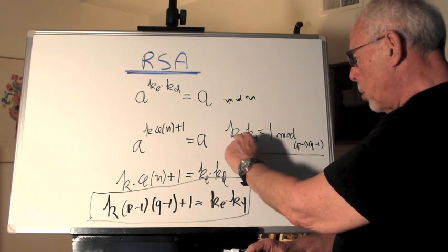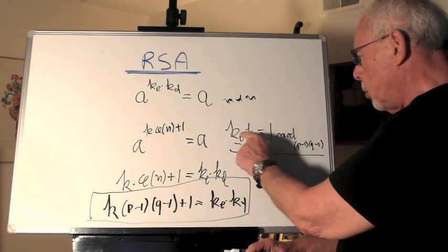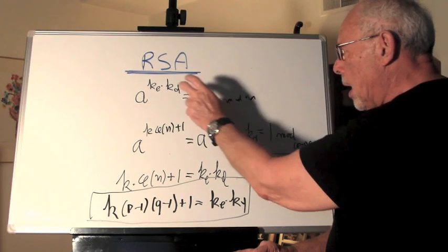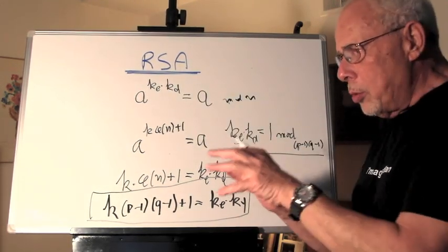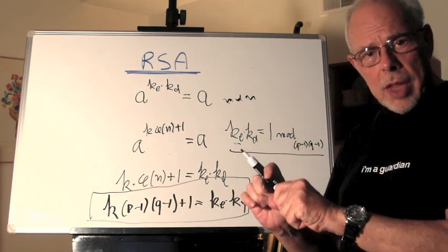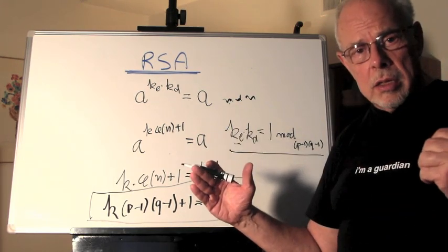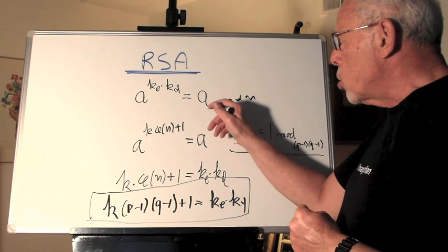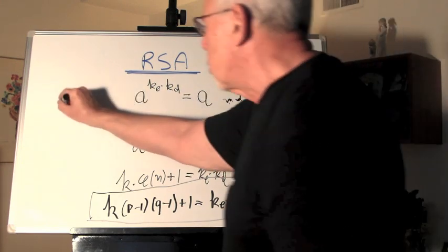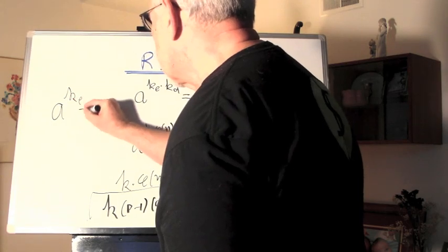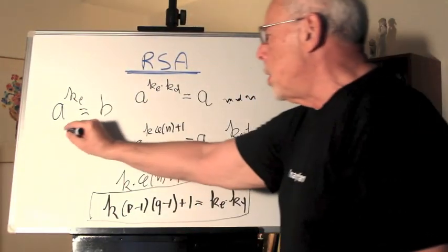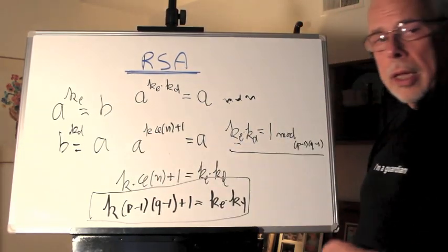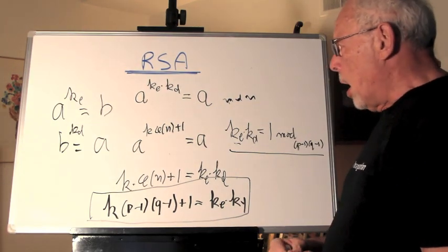So, any number here that is co-prime with this will qualify as KE. From KE, we can find KD, and then we have it. We have two numbers that are distinct, are different, are out of a large set, so it's difficult to guess what they are, and they accomplish what we want. So, A to the power of KE is a number B, which is a ciphertext, B to the power of KD is A, which is back the plaintext. Everything here is mod N.